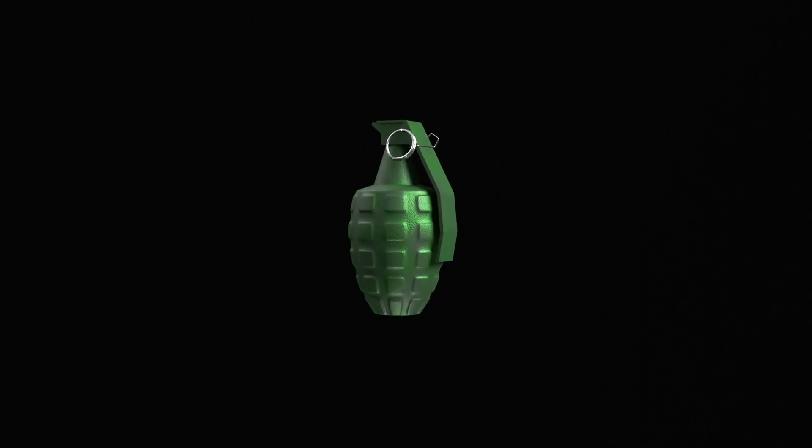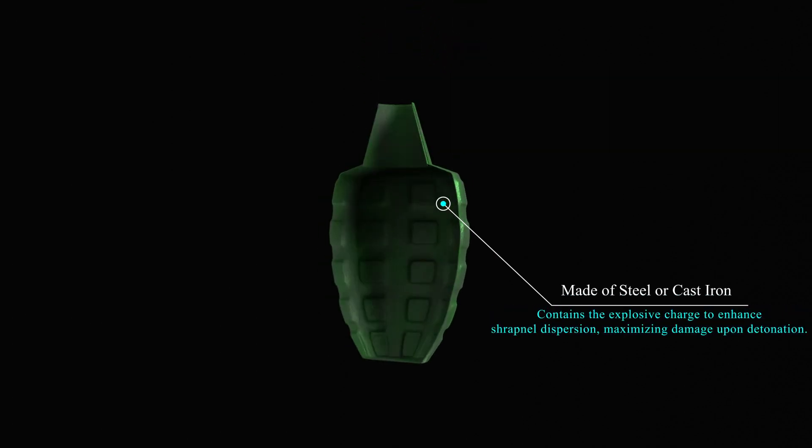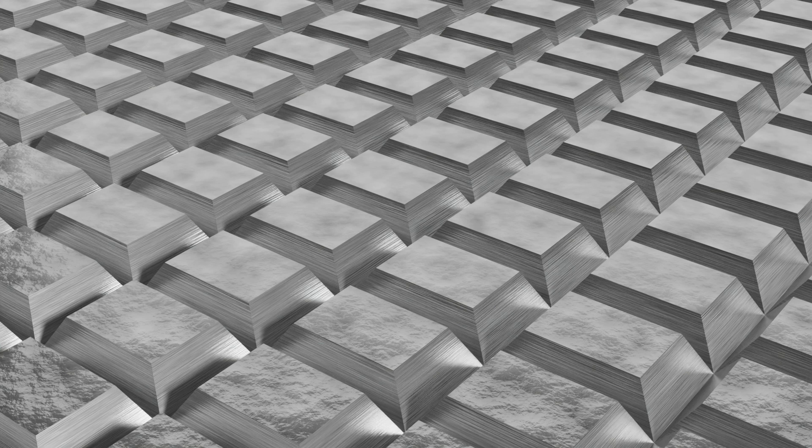First, let's look at the body. The body of a fragmentation grenade is typically made of steel or cast iron. This is designed to shatter upon detonation, creating high-velocity fragments. Some grenades have a pre-notch design to control the size and shape of these fragments, enhancing their lethality.